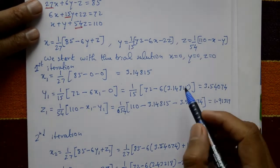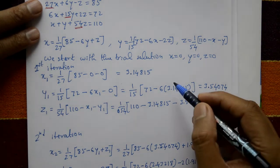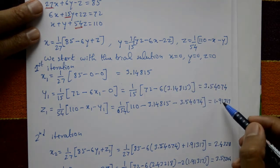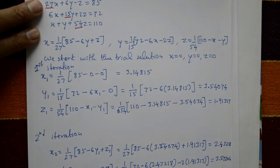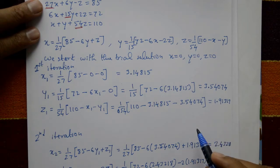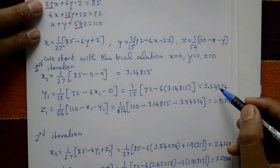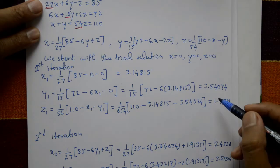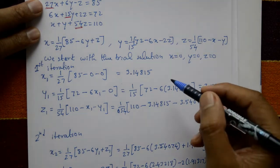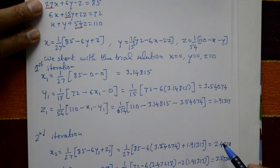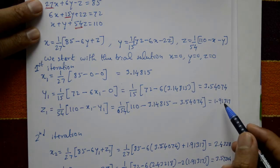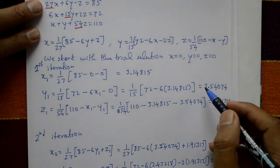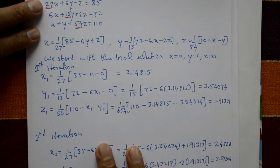Compare the first and second iteration values. The x values are 3.148 vs 2.432, y values 3.540 vs 3.572, and z values 1.913 vs 1.925 — these are different, so continue to the third iteration.